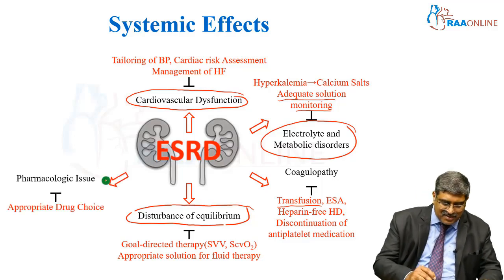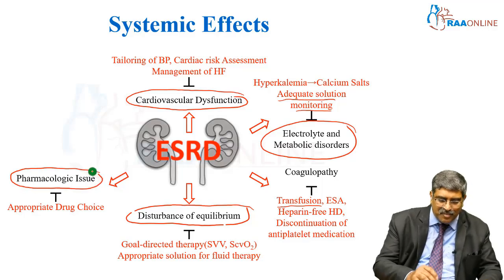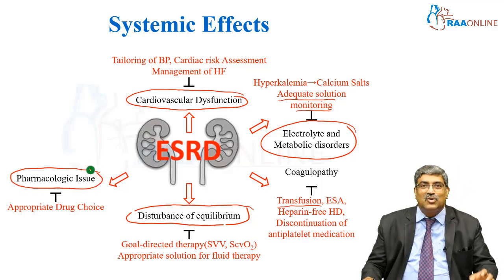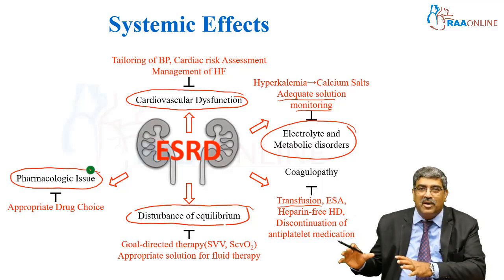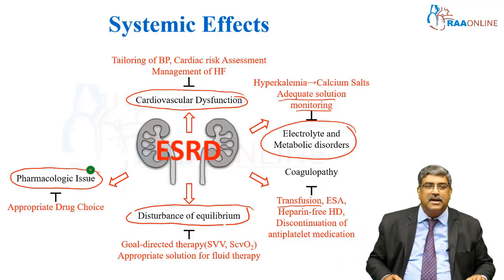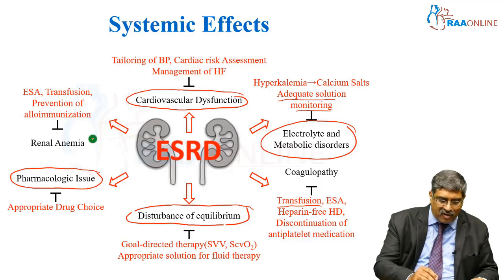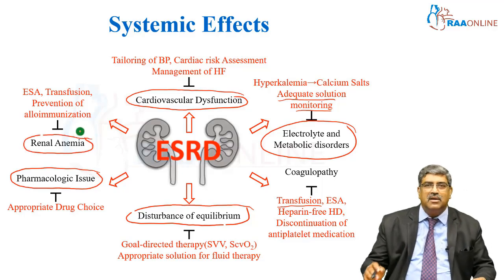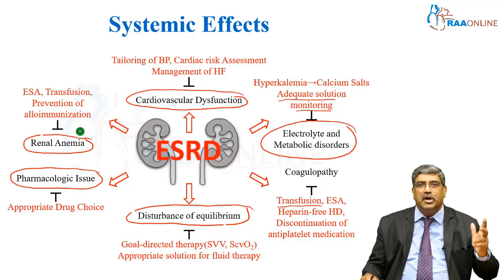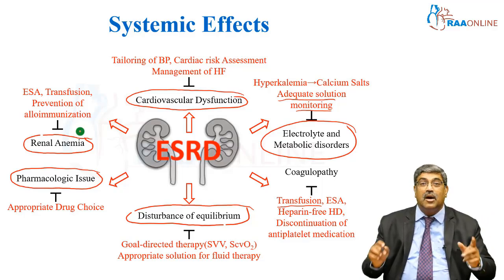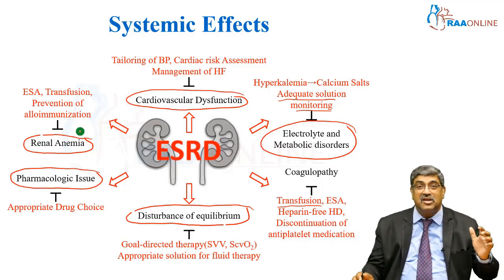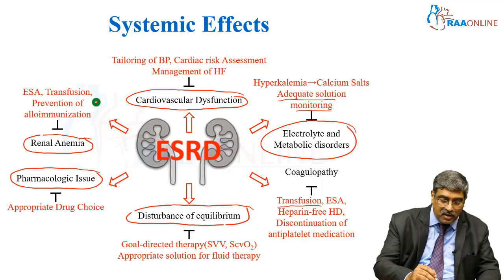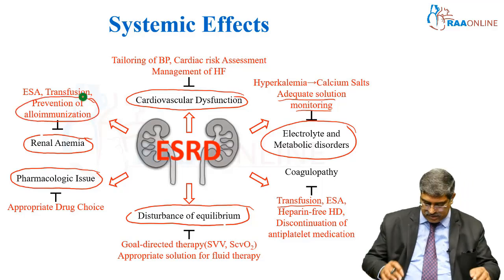Another important thing is pharmacological metabolism of drugs. So you have to choose an appropriate drug which is not metabolized or excreted by the kidney. Coming to renal anemia, the hemoglobin will be slightly low. You can go for erythropoietic-stimulating agents or transfusion, but another important thing is that the patient might require a transplant at a later stage, so you have to prevent allo-immunization.